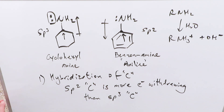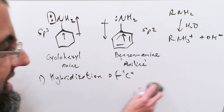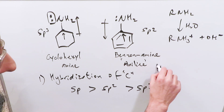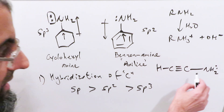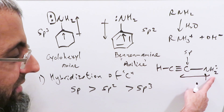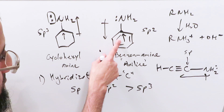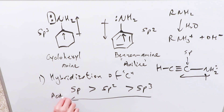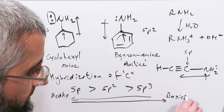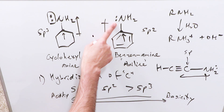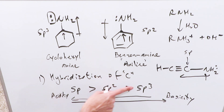By extension, consider this additional fact: the sp carbon would be more acidic than an sp2 carbon, which would be more acidic than an sp3 carbon. For example, in an acetylene where you have HC≡C–NH₂, that carbon is sp and very electronegative, making that amine even less basic than sp2, which is less basic than sp3. So: acidity increases sp3 → sp2 → sp, and basicity increases in the opposite direction. A nitrogen attached to an sp3 carbon is most available to donate its lone pair for protonation.